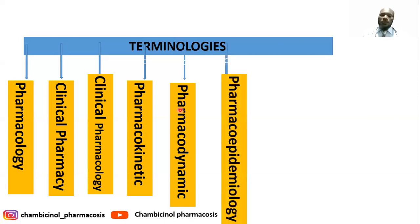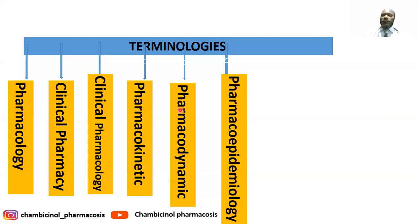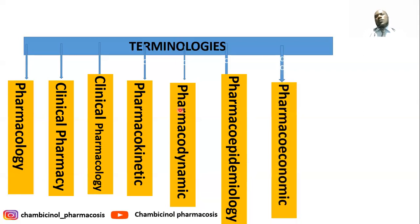We have pharmacoepidemiology, which is the branch of science dealing with the effects and uses of drugs in a well-defined population. This is the bridge between two terminologies: pharmacology and epidemiology. We also have pharmacoeconomics, which deals with comparing the value of one pharmaceutical drug with another.